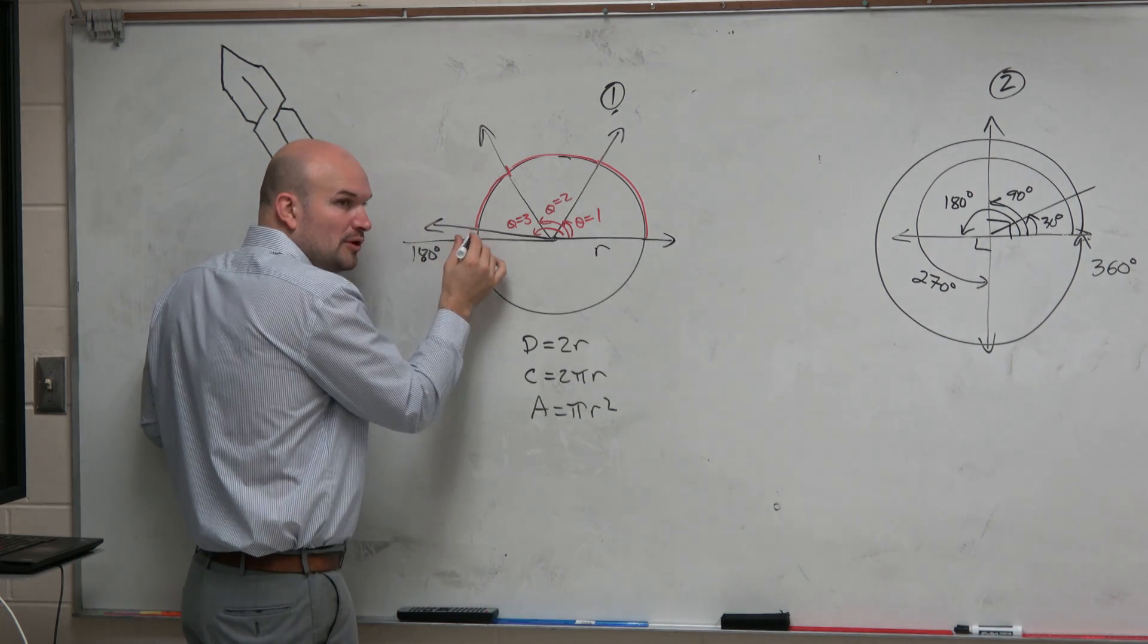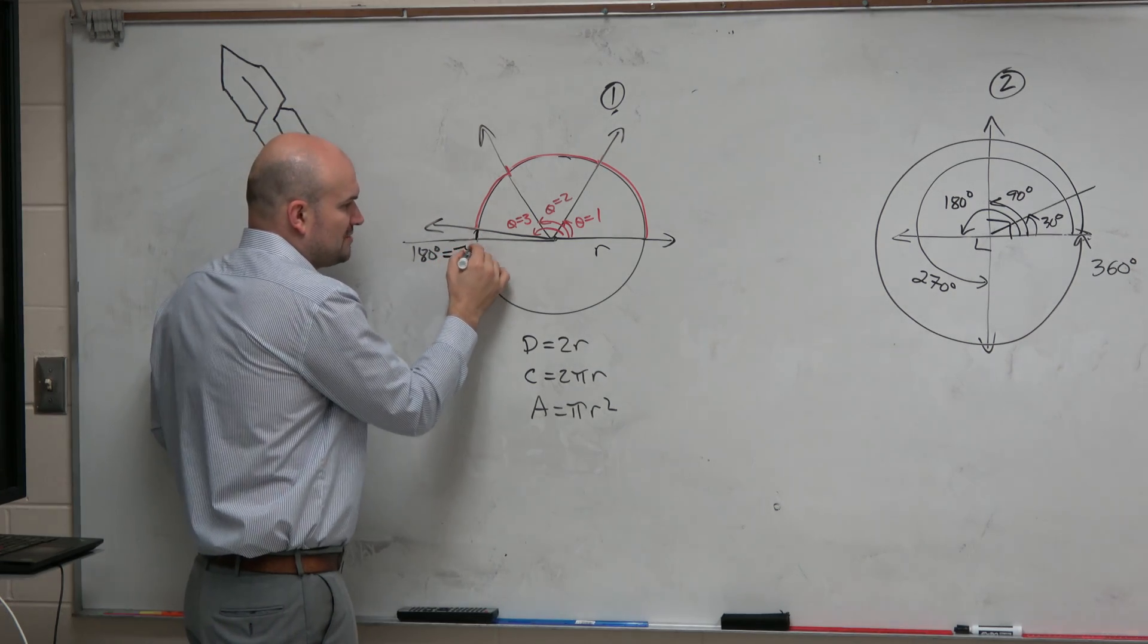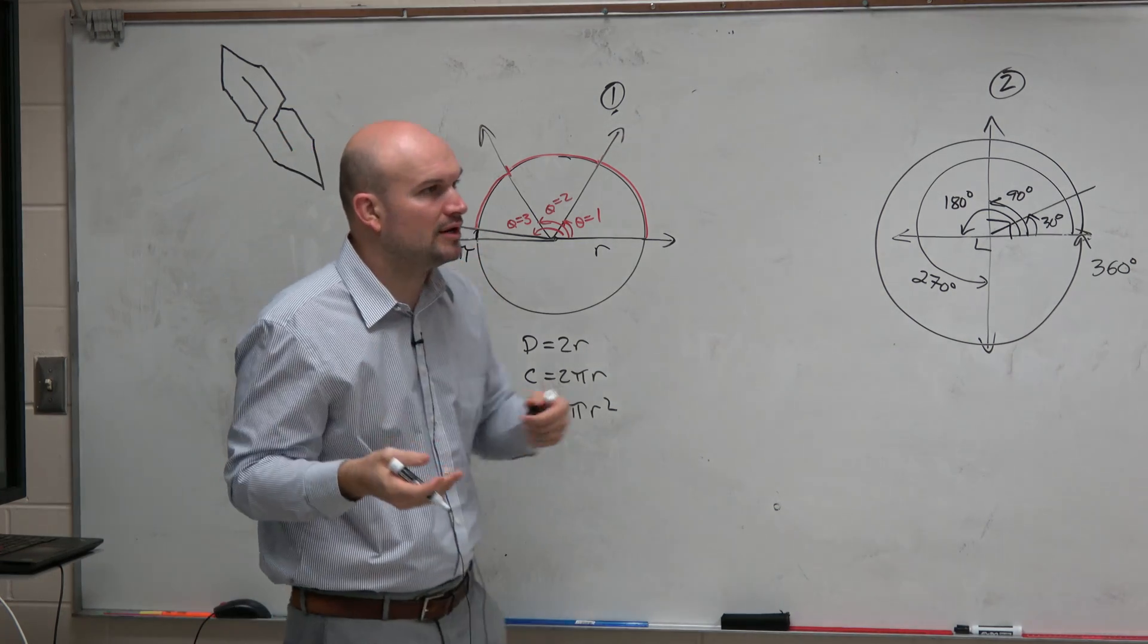So this little section is the 0.14159 dot, dot, dot. That's where that portion comes from. So that's why that's pi, because pi is 3.14. So basically,